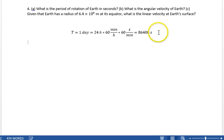That's how many seconds are in a day. What is the period of rotation of the Earth in seconds? 86,400 seconds. That's part A.